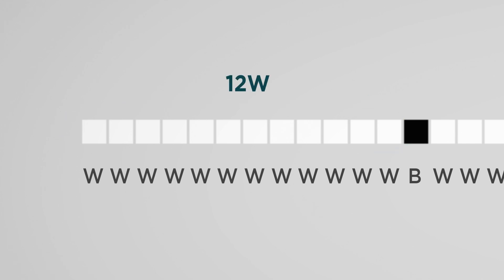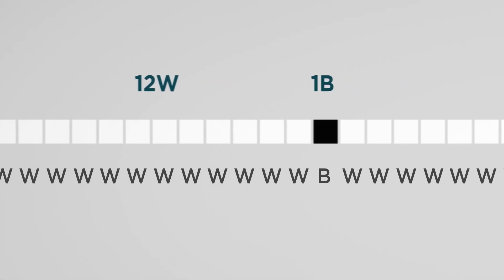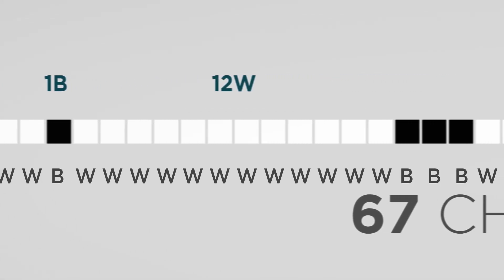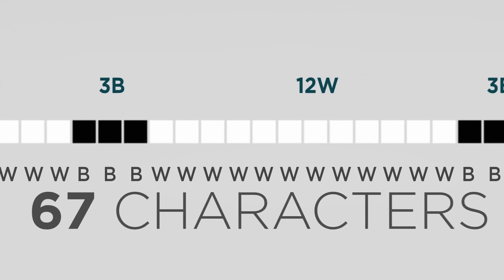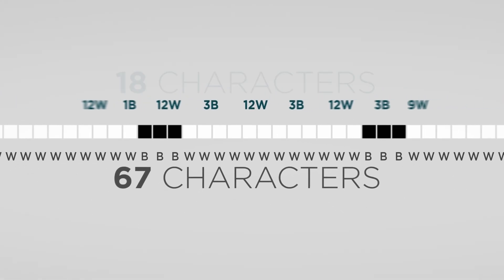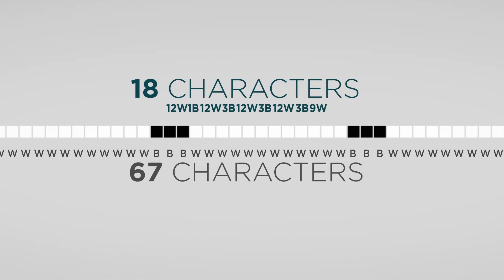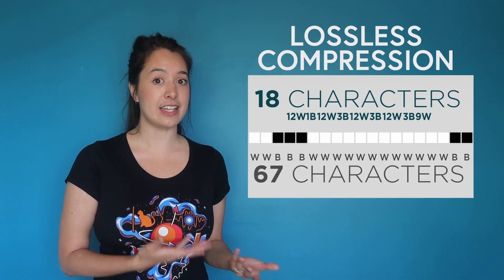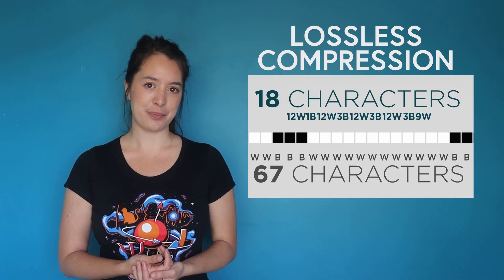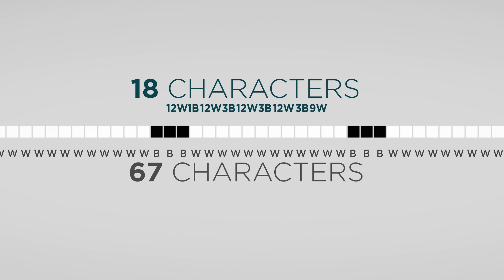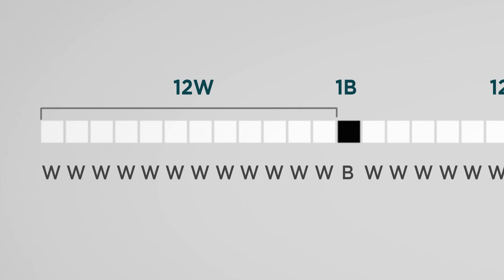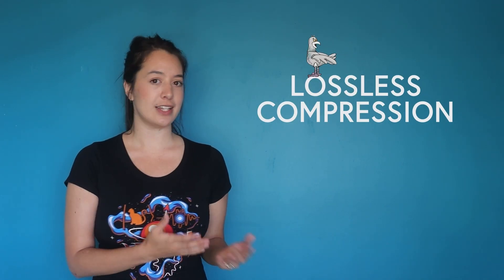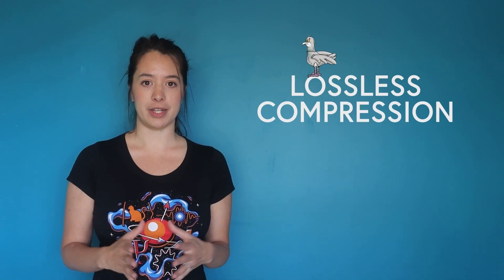Using a lossless compression algorithm, we can represent the same information more efficiently. Rather than writing out each W individually, we can write a 12 and then a W to signify that there are 12 white pixels in a row. Similarly, we write one B to signify one black pixel, another 12W for another row of 12 white pixels, 3B for three black pixels, and so on. Here we've compressed the original 67 characters down to just 18. The principle remains the same whether using binary or ASCII, and no information is actually lost — it's just transformed. Lossless compression is really useful for things like text files, where the original file needs to be replicated perfectly.